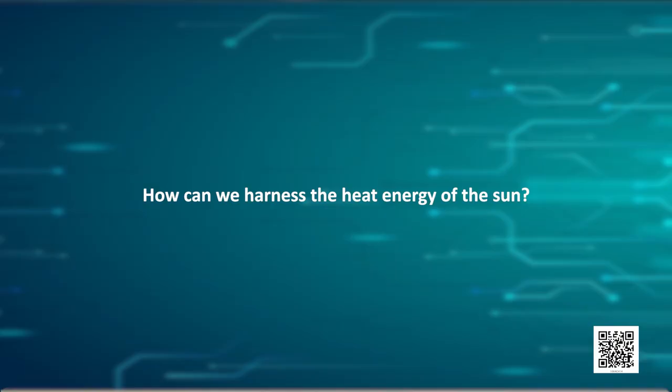Only a small amount of solar energy reaches the outer layer of the earth's atmosphere. Nearly half of it is absorbed while passing through the atmosphere, and the rest reaches the earth's surface. So now the question is, how can we harness the heat energy of the sun?